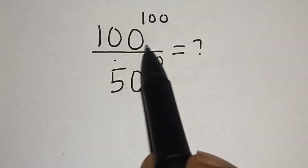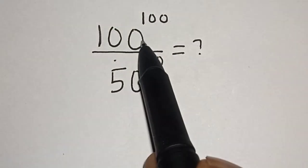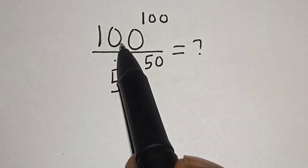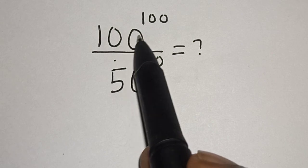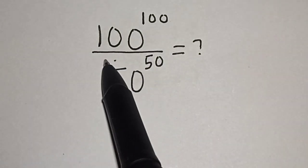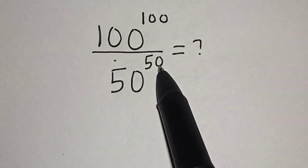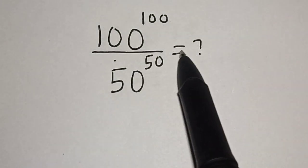Hello, welcome to MathGIS. In this class, we quickly want to evaluate this math problem: 100 raised to the power of 100 divided by 50 to the power of 50 is equal to what?